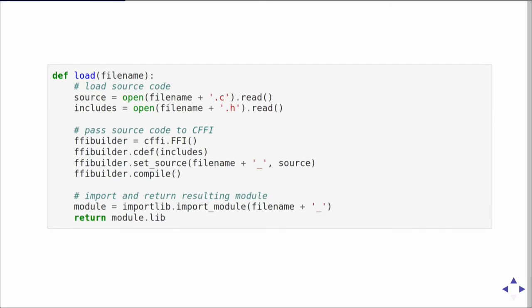The load function consists of three steps. First it loads the source code — opens the C file and the header file. Then it uses CFFI to build a Python module out of that source code. The first call, the cdef call, tells CFFI what interface to export to Python, so we pass in the header file contents. The second call passes in the source code implementation. The last step has CFFI actually build the module by running a C compiler in the background, and we then import and return that module to our test case.